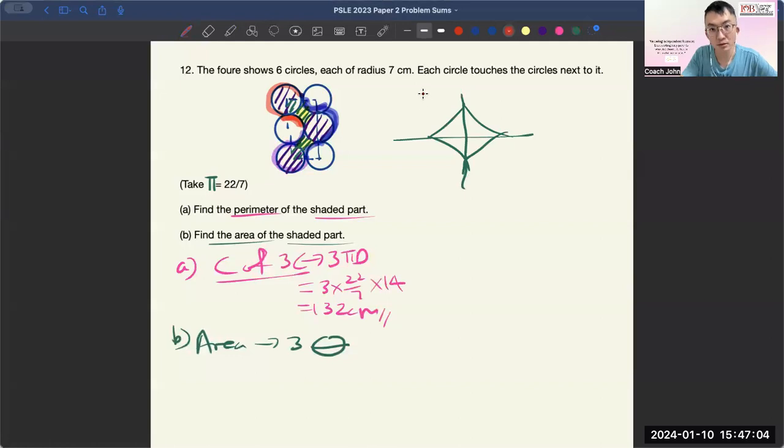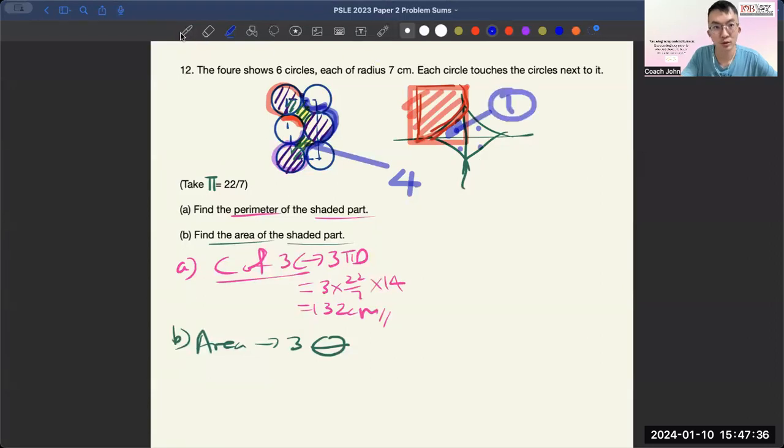This part is actually the quadrant. And this part is actually a square. So a square cut away a quadrant will give you this part. Just multiply by one, two, three, four, and another four here. So there are a total of eight. Now just find one first.